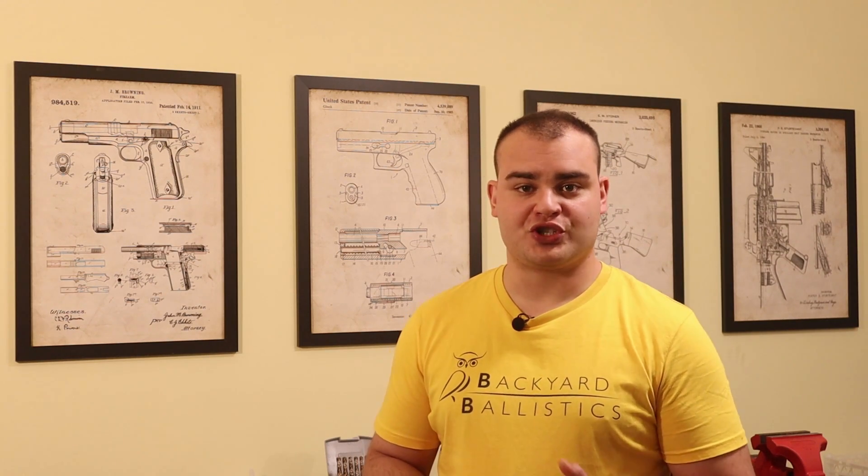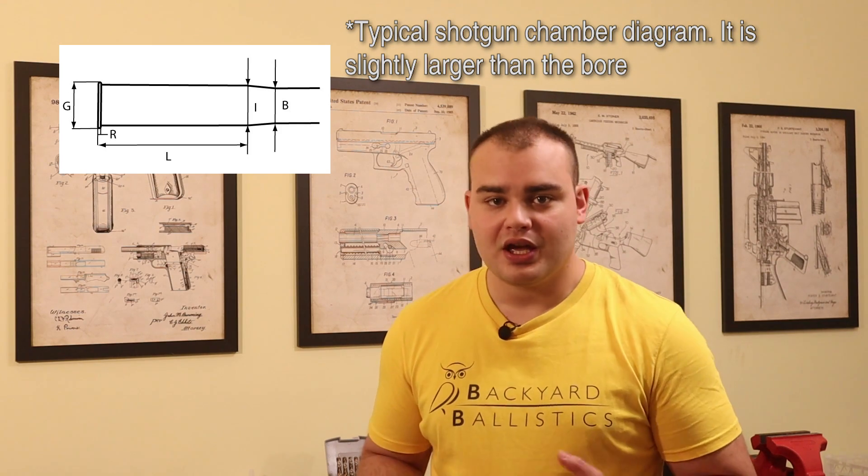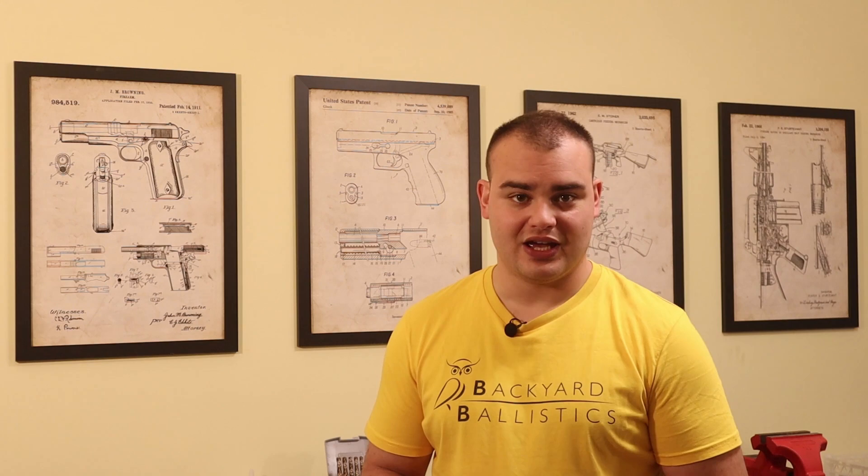You see, if the bore was uniform without a chamber, for the bullet to fit inside the case and the case inside the barrel, the bullet would need to be undersized by two times the thickness of the casing, which is only acceptable if the case walls are very thin.